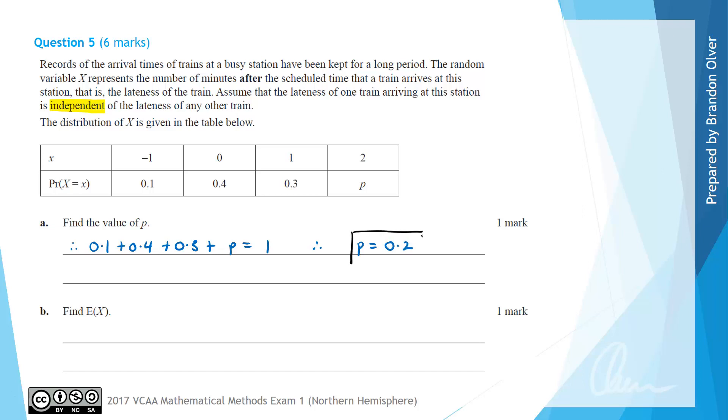So that is the answer to part A of this question. For part B we're asked to find the expected value of X or E of X. And we know that E of X is equal to the sum of X times P of X. And that formula is given on your formula sheet so you can look that up in an exam.